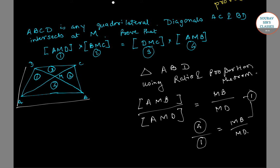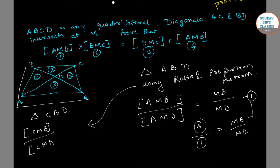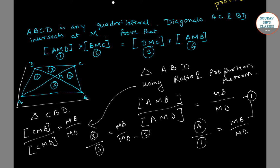Now taking into consideration triangle CBD, using the same Ratio and Proportion Theorem, we can say that the area of triangle CMB divided by area of triangle CMD equals MB divided by MD. Since we renamed CMB as 2 and CMD as 3, this gives us 2 divided by 3 equals MB by MD. Let us call this equation number two.